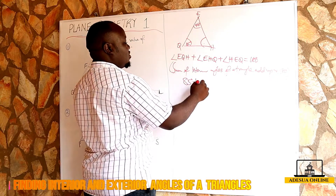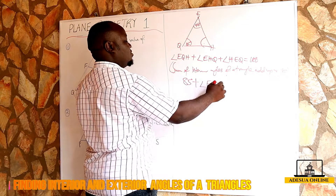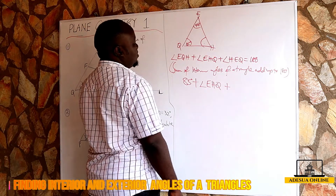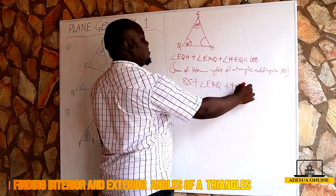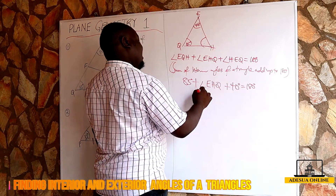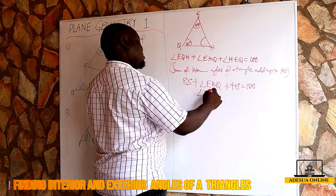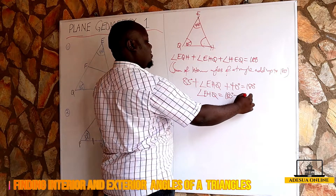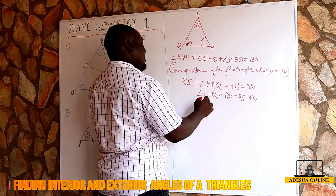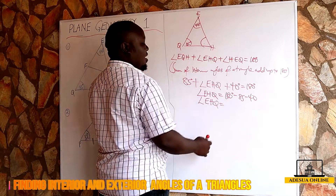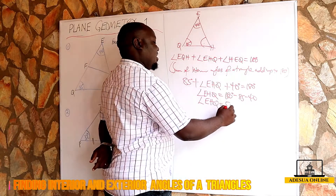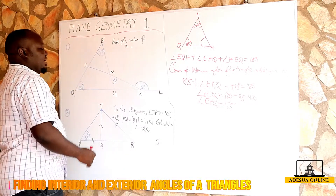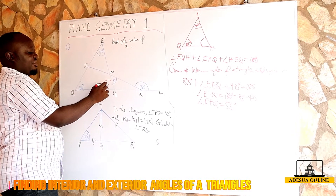Angle EHQ is what we are looking for. So angle EHQ will be equal to 180 minus 85 minus 40, which gives us 55 degrees. So angle EHQ is 55 degrees.